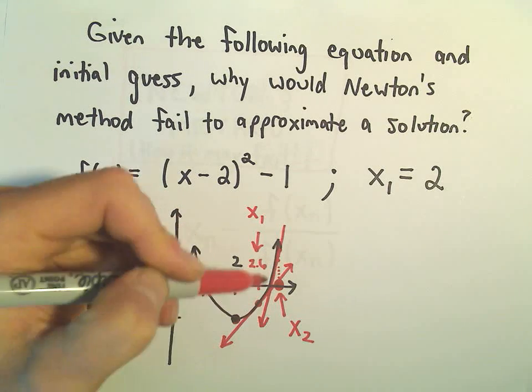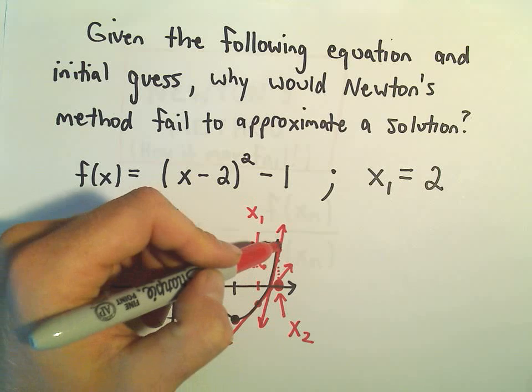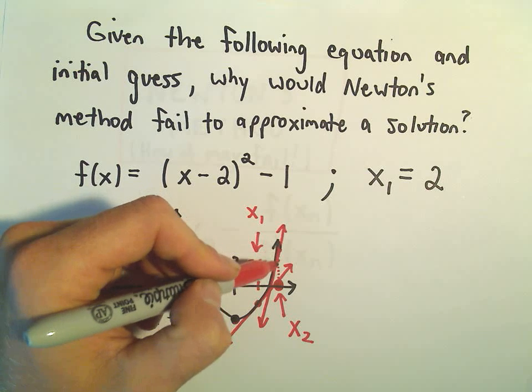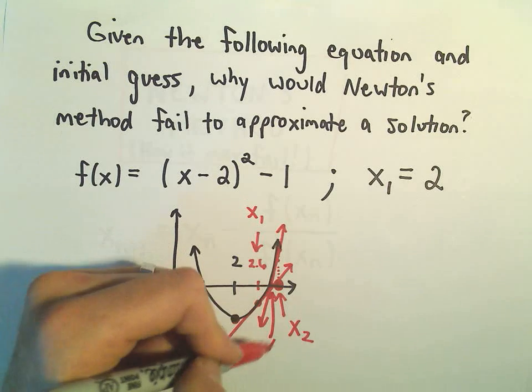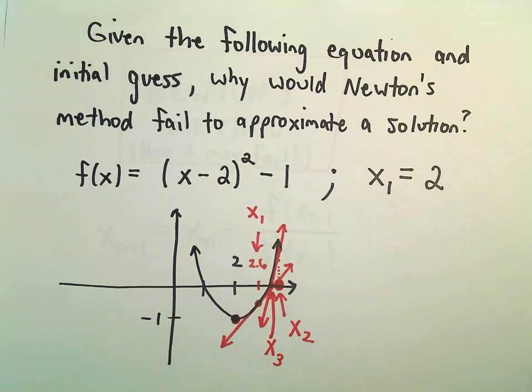And again, we're trying to get close to x-intercepts on the real graph. So notice by looking at this new value, I'm getting even closer to the true x-intercept. And that would be our third guess, etc., etc.